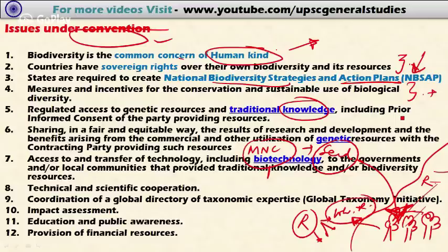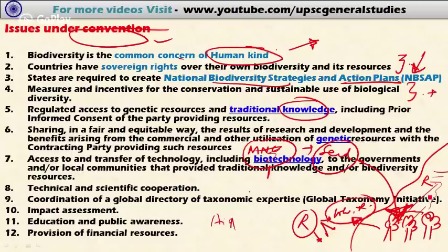For example, if India has a genetic resource and a US multinational company wants to access it, they must provide royalty to the local government or local body. This is the gist of Access and Benefit Sharing. The results of research and development and benefits arising from commercial utilization of genetic resources must be shared in a fair and equitable way.